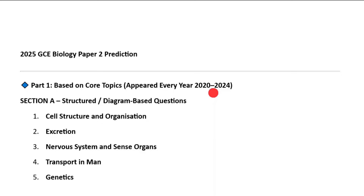I've structured this prediction into two. Part one, which is based on core topics, is structured into Section A — topics appearing from Section A — and also Section B. Then I also have Part two, which is based on how some of the topics have been cycled throughout from 2020 to 2024, and I've also cut that part into Section A and also Section B.